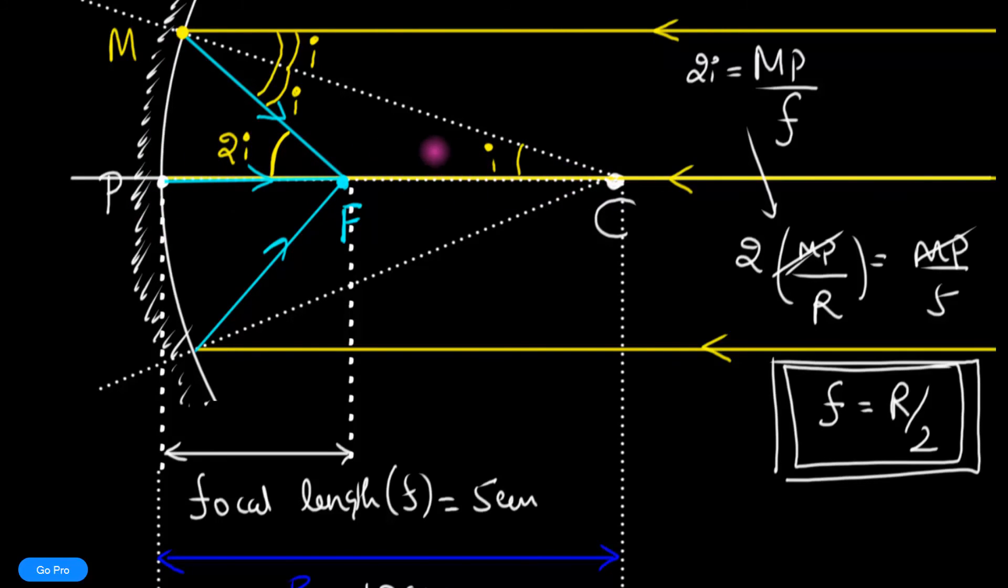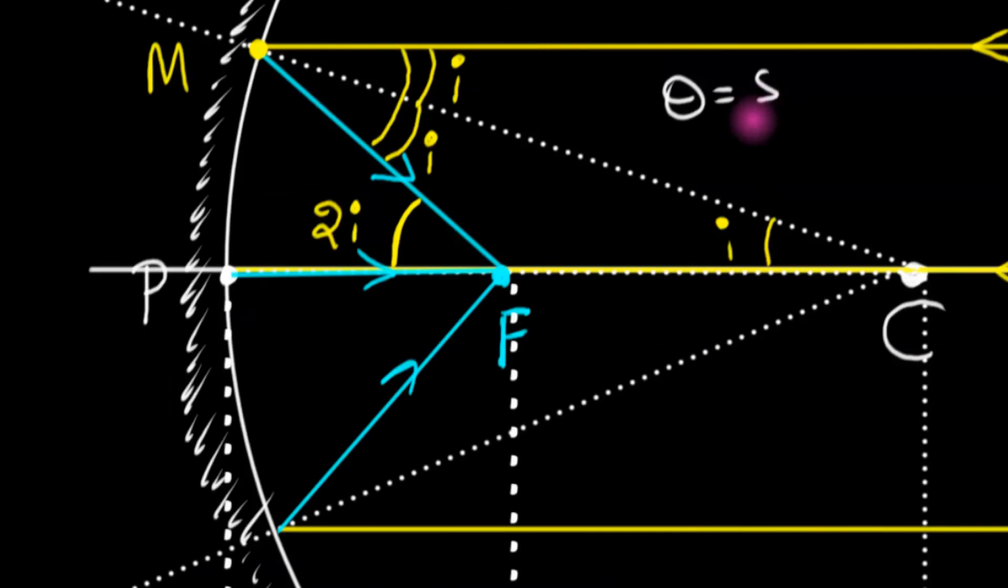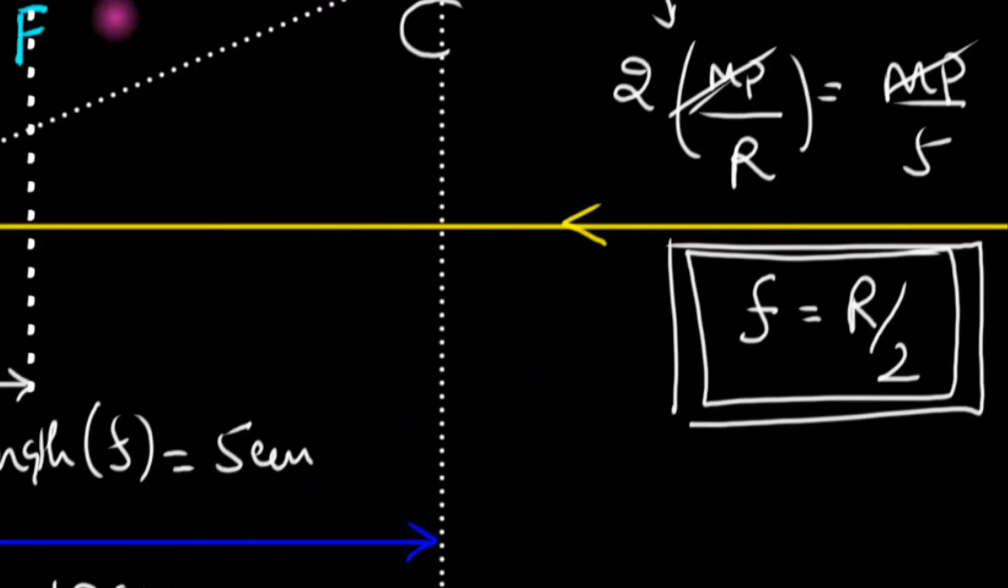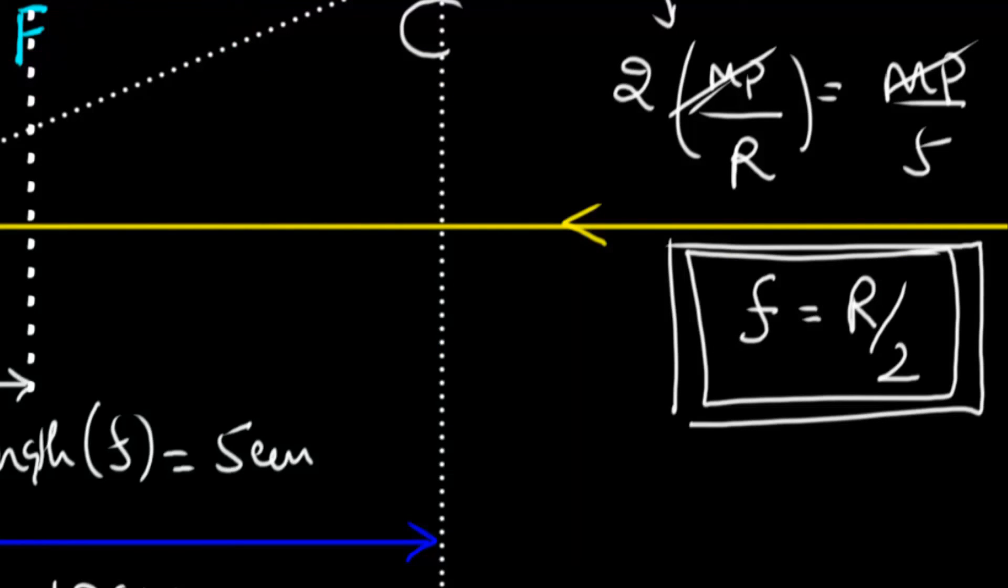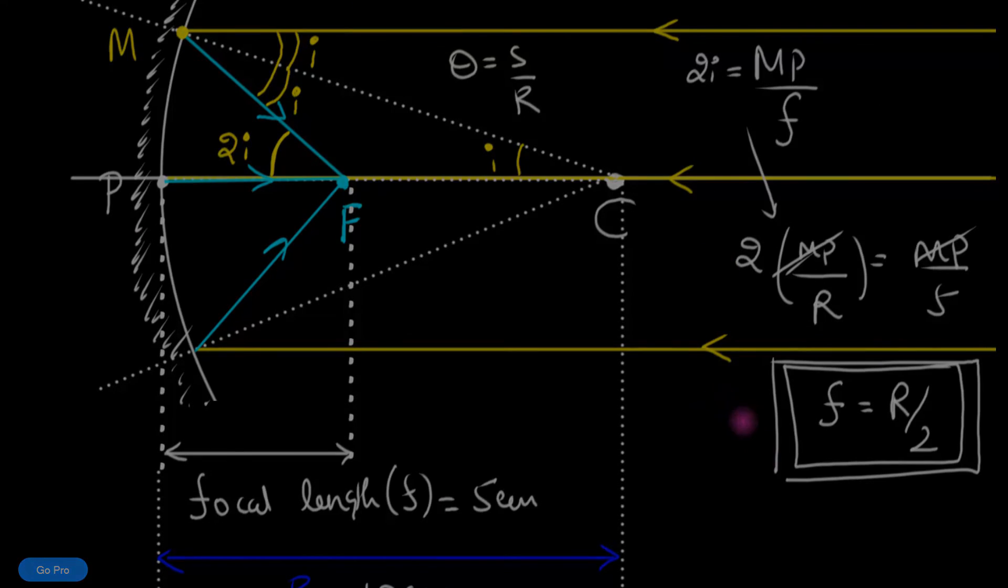Since θ equals s by r, if you want the same arc length but twice the angle, you need to decrease this by half—make this half. That's exactly what happens here. That's why focal length turns out to be half of the radius of curvature. We're going to use this in the future, so see you next time. Take care.